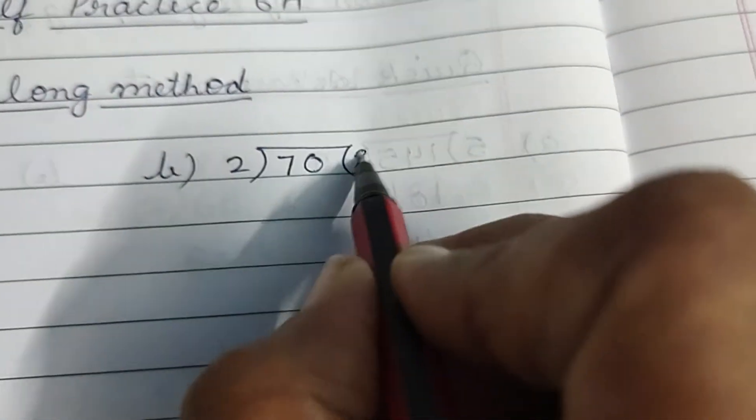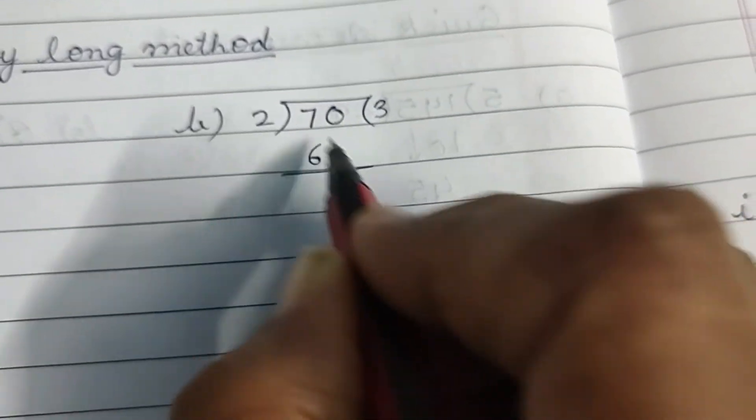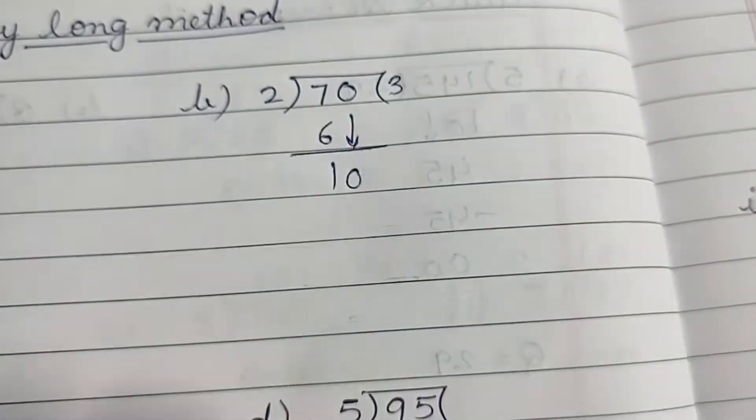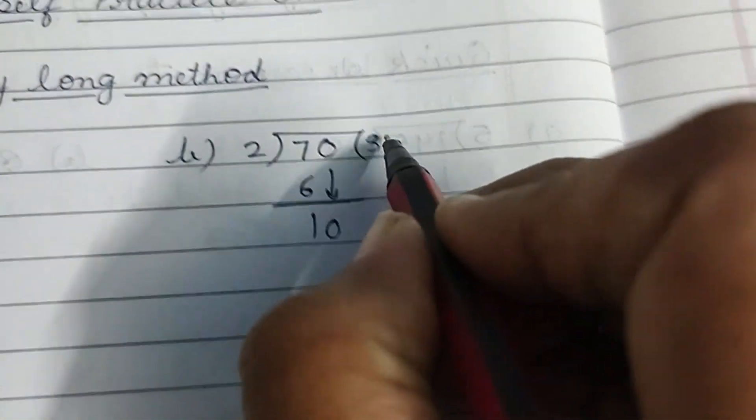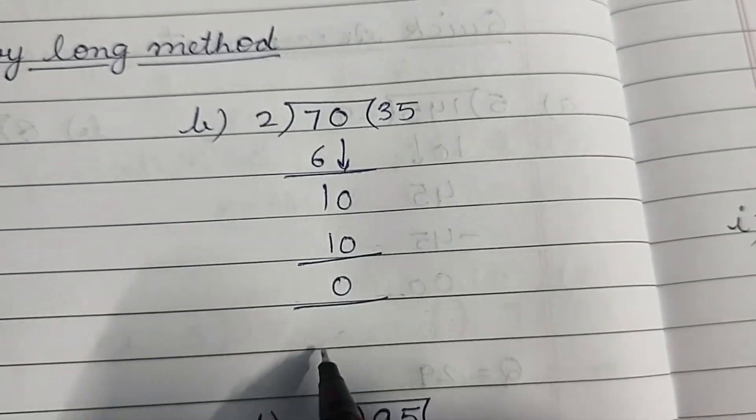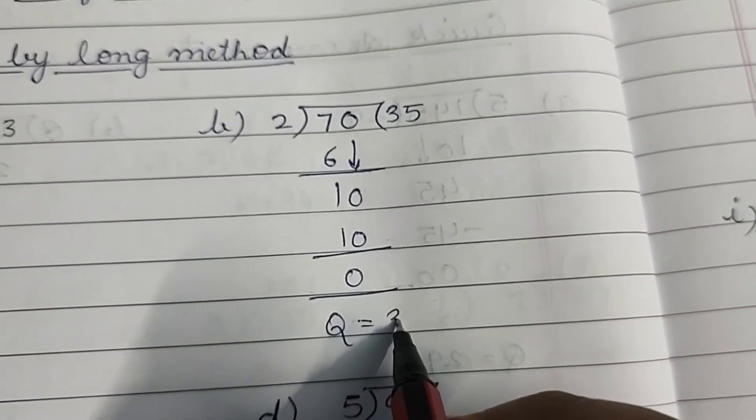2×3, 6. 7 minus 6, 1. Bring 0 down, ho gaya 10. 2×5, 10. 10 minus 10, 0. And quotient 35.